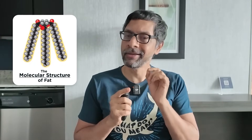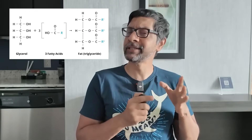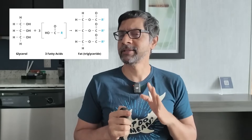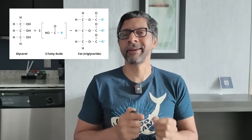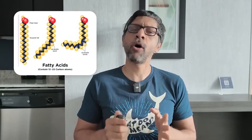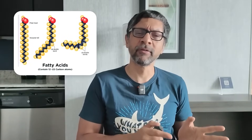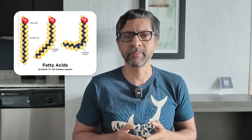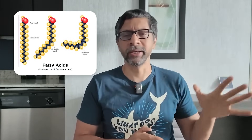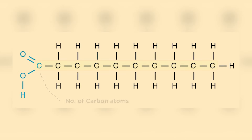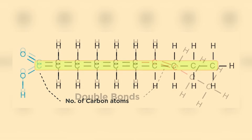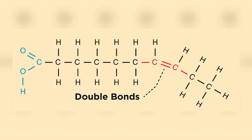To understand how fat performs its energy-storing feat, we need to understand its molecular structure. At its core, a fat molecule is made up of a glycerol backbone and three fatty acid chains, forming a triglyceride. Fatty acids are long hydrocarbon chains typically containing 12 to 22 carbon atoms with a carboxyl group at one end. The number of carbon atoms and the presence or absence of double bonds between them determine the properties and classification of the fat.